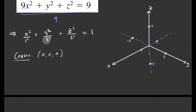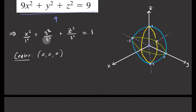Now we connect the intercepts to draw the ellipses. The first ellipse is in the x-y plane, connecting those intercepts. Then we draw the y-z plane ellipse, and finally the x-z plane ellipse connecting the remaining intercept points. That gives us our complete ellipsoid sketch.